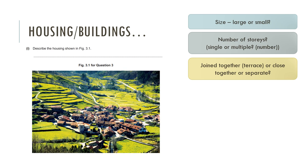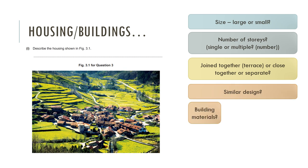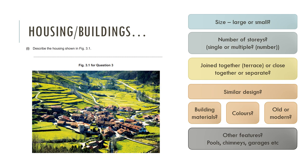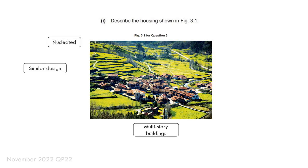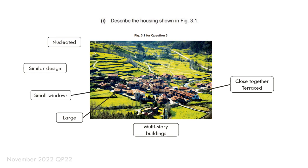Are the buildings generally joined together, close together, or separate and spread out? Is there a similar design or a variety of design? Is there a common building material or common colours? Do they look old or modern? Can you see lots of pools, certain types of chimneys, garages, particular window features, or solar panels? All these types of things you can consider. When labelling a photo you can note: nucleated, similar design, mainly multi-storey, close together or terraced, small windows, and red tiled roofs.